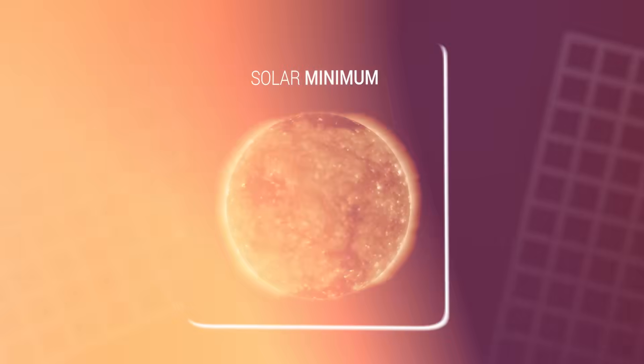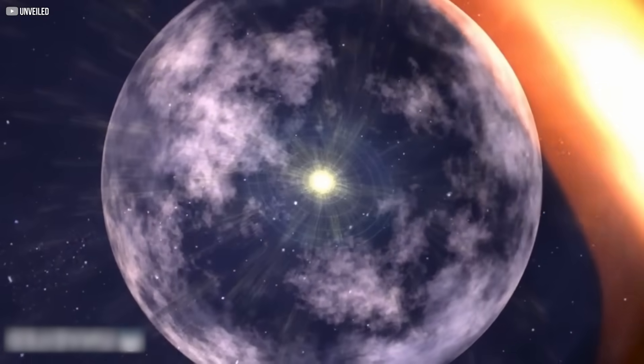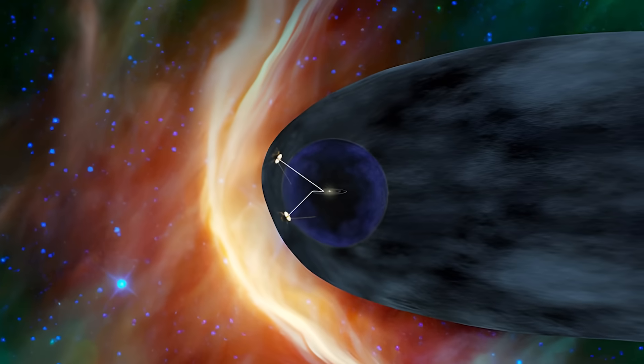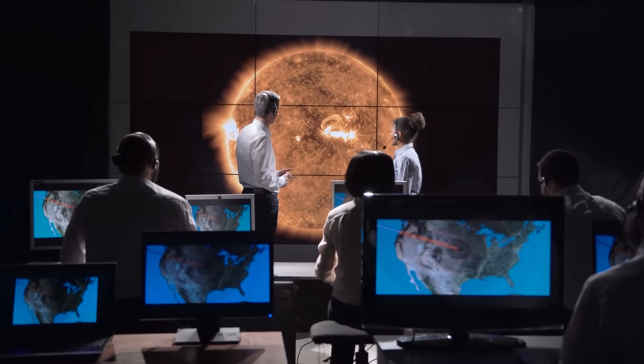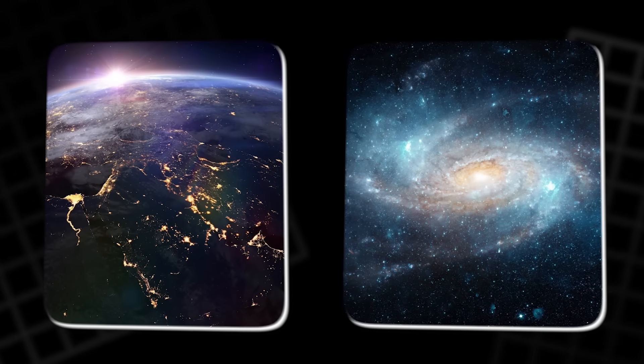During solar maximum, when the Sun is more active, the heliosphere expands, providing stronger protection against cosmic rays. During solar minimum, the heliosphere contracts, leaving Earth more vulnerable. Understanding the shifting nature of the heliopause helps scientists predict changes in radiation levels which could impact Earth and space infrastructure.